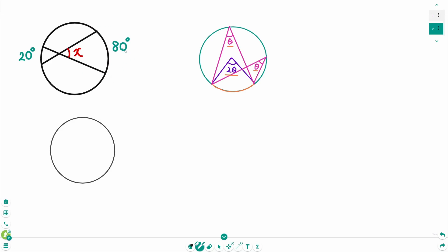In here the central angle is 80 degrees subtended by this arc. That means this arc, the central angle is 80 degrees. So the inscribed angle is 40 degrees.